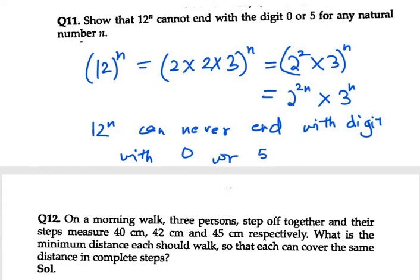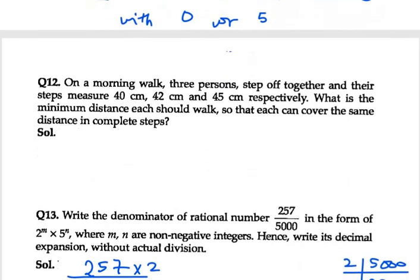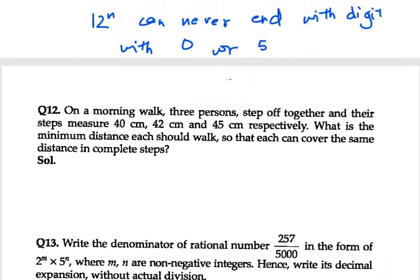Now moving on to problem number 12. It says on a morning walk, three persons step off together and their steps measure 40cm, 42cm and 45cm respectively.